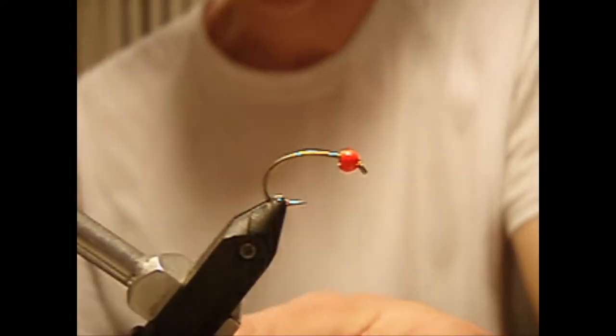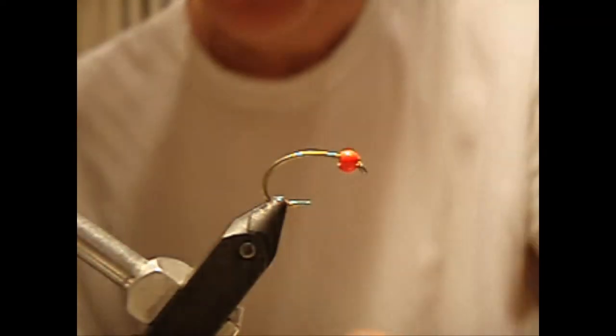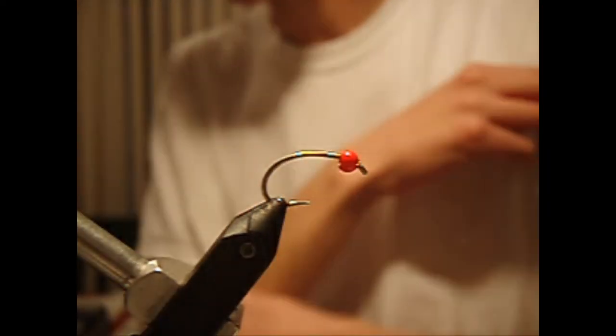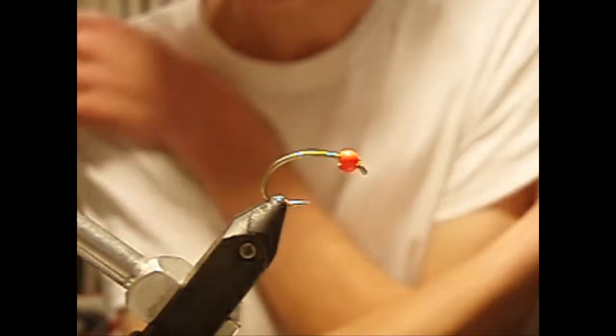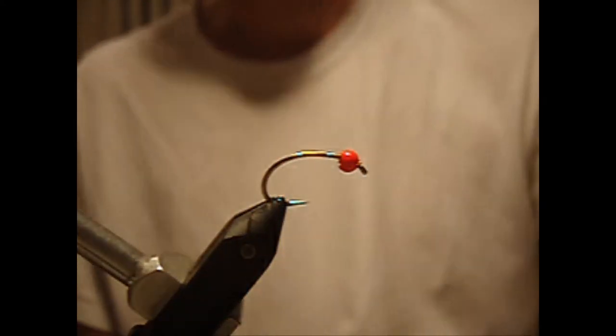All right, so today we're going to be tying a fly I call the high-water worm. It's basically a San Juan worm that uses a couple different body materials. There's a lot of ways to tie San Juan worms; this is one of my favorite ways.